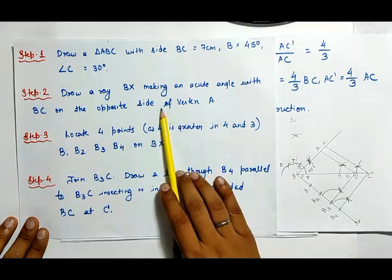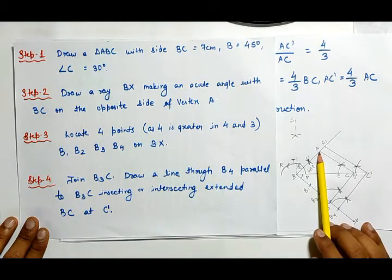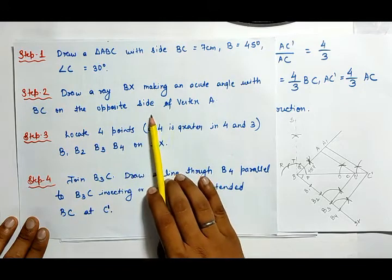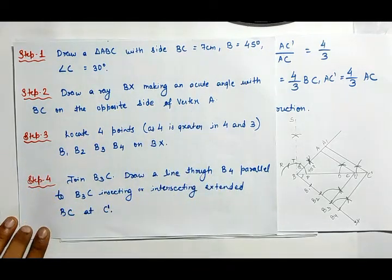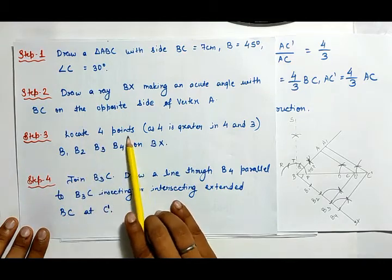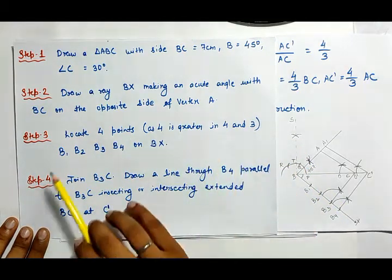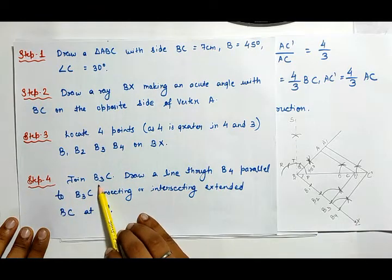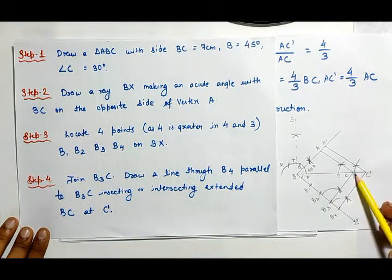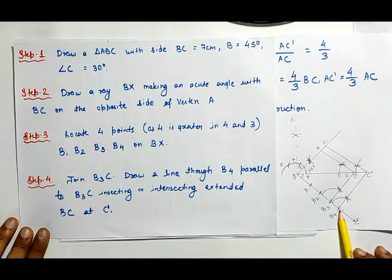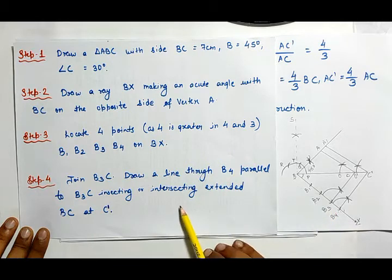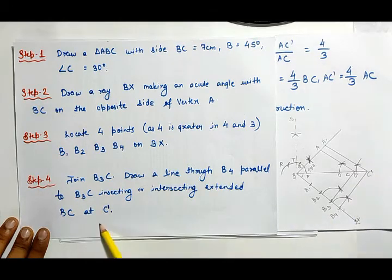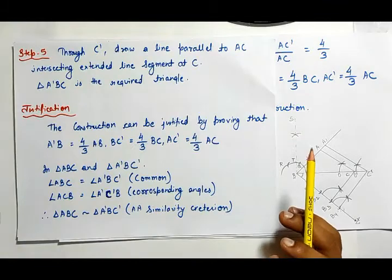We have to draw ray BX making an acute angle with BC on the opposite side of vertex A. Step 3: locate four points — since 4 is greater than 3 — B1, B2, B3, B4 on BX. Step 4: join B3C, then draw a line through B4 parallel to B3C intersecting the extended BC at C dash.